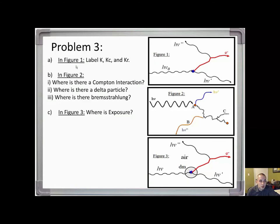For problem 3, part A, in figure one, label kerma, collision kerma, and radiative kerma. Kerma happens at a point — right at that location. Collision kerma takes place along the red electron track, and radiative kerma is a photon releasing off of the electron.